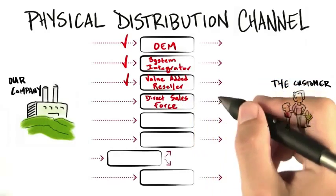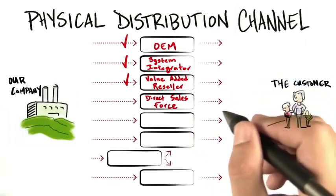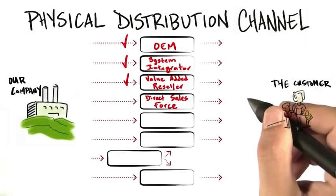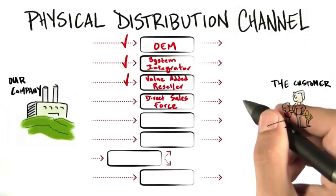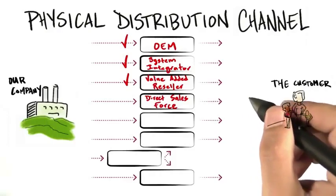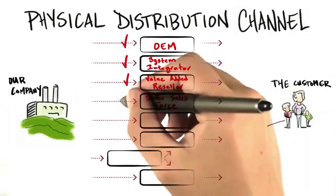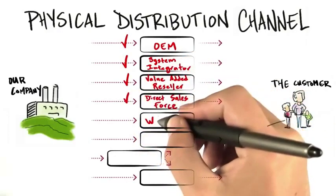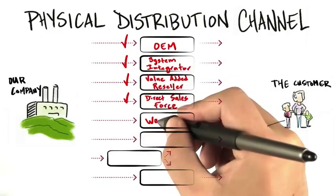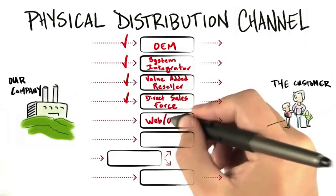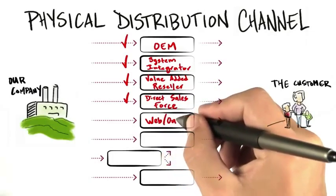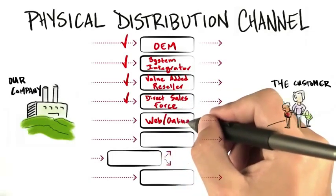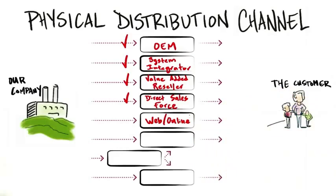In a physical channel, a direct sales force are salespeople that work for you directly and typically sell directly to the end user. Now if you're delivering a physical product, one of the alternate channels that you might want to consider is the web or online sales as well.